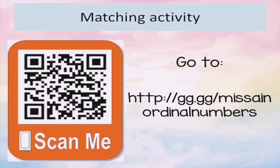You can try it on your own. Go to gg.gg slash Miss Ein ordinal numbers, or you can scan the barcode. This is a matching activity, so you can do this activity on your own.